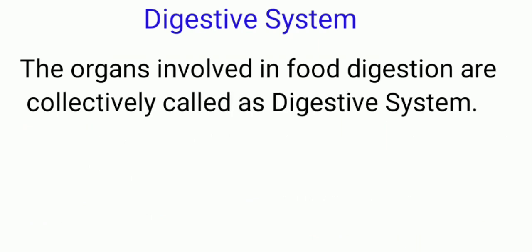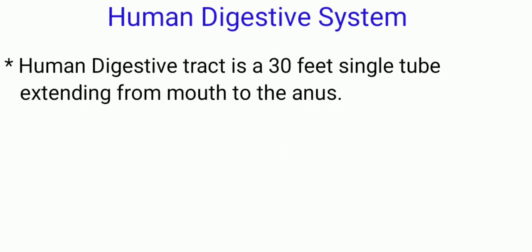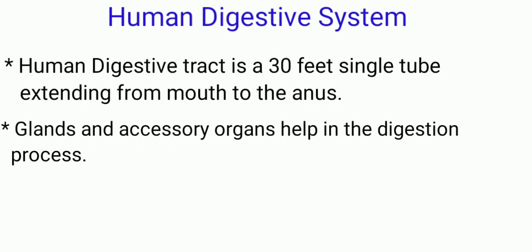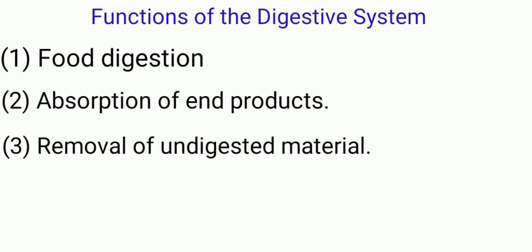The organs involved in food digestion are collectively called the digestive system. The human digestive tract is a 30-foot single tube extending from the mouth to the anus. There are glands and accessory organs helping the digestion process. The functions of the digestive system are food digestion, absorption of final products, and removal of undigested materials from the body.